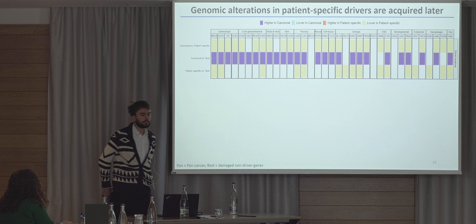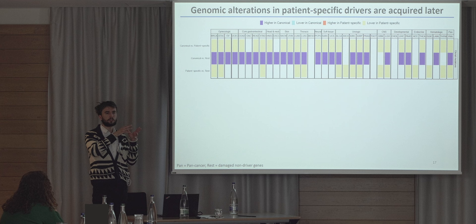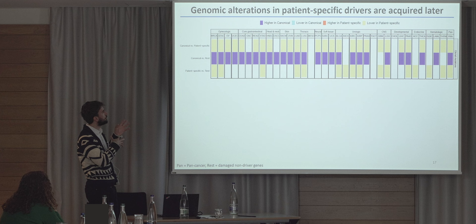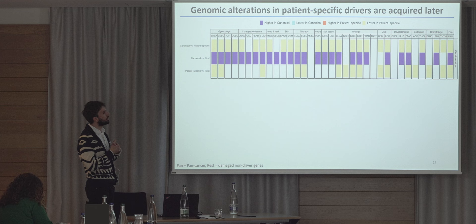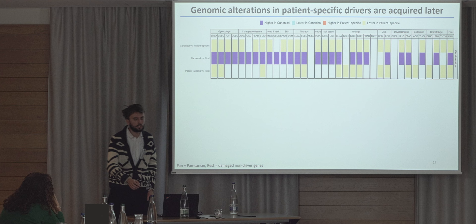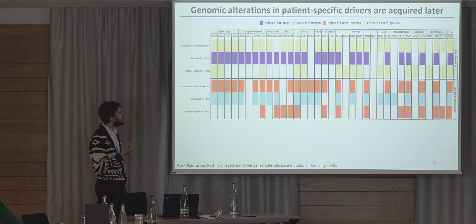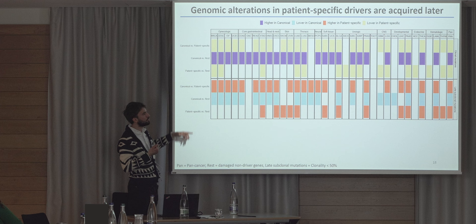Finally, as I mentioned clonality at the beginning, we wanted to see whether canonical drivers and patient-specific drivers are acquired at different times in the tumor's evolutionary history. We compared canonical drivers to patient-specific drivers and to the rest of damaged genes. When we look at clonal mutations, patient-specific drivers have a lower amount of clonal mutations compared to canonical drivers and to the rest of human genes — so they are really acquired a bit later in the tumor's evolutionary history. To further confirm this, we looked at late subclonal mutations and found patient-specific drivers are indeed enriched in these mutations compared to canonical drivers and the rest of human genes.